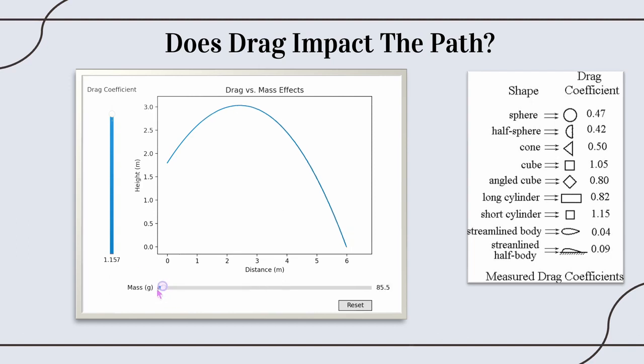Now, we can do the pizza. The pizza weighs 80 grams and has a drag coefficient of 0.5. A little change, but once again, not that much.